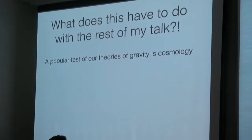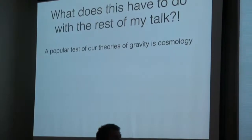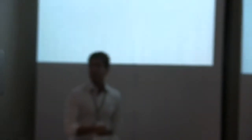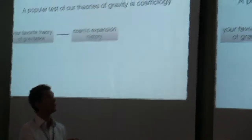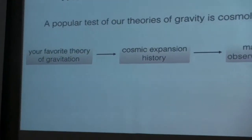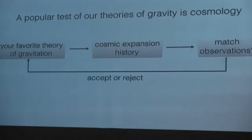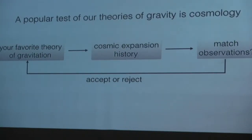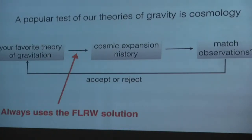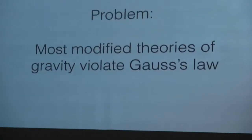The procedure for cosmological tests is simple: take your favorite theory of gravitation, calculate what are the predictions for the cosmic expansion, and see if it matches observation. If it does, you accept the theory; if not, you reject it. But in this step you're using an FLRW metric — you are assuming there is no back reaction, that discrete masses gravitate and expand the same way as a continuous model — which might be a problem, because most modified theories of gravity tend to violate Gauss's law.